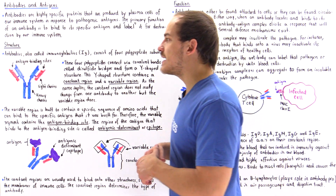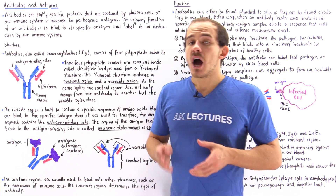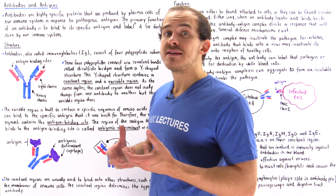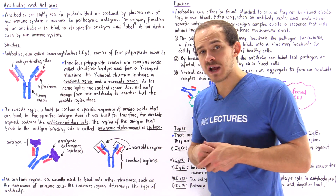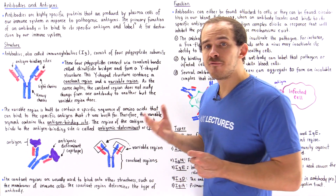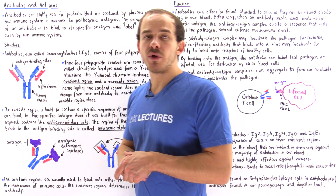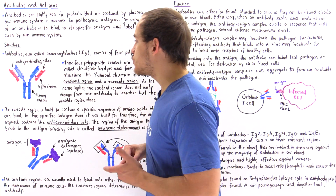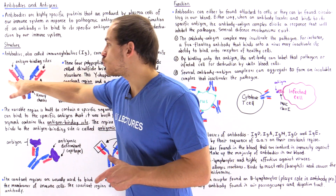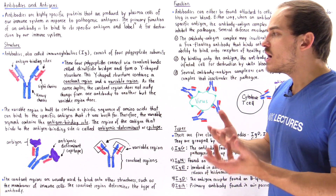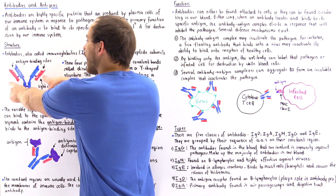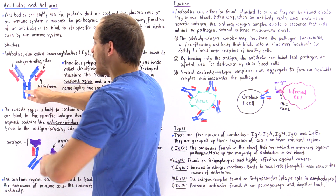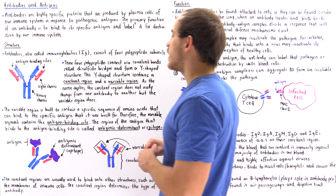What about the structure of these antibodies? Antibodies consist of four polypeptide subunits that bind together via disulfide bridges — covalent bonds between sulfur atoms — and they bind in such a way to form a Y-shaped structure. Two of these polypeptides are heavy chains, which are large polypeptide chains, and the other two chains are the light chains, which are smaller than the heavy chains. The two light chains are bonded via disulfide bridges to the two heavy chains, and the two heavy chains are also bonded to each other by these disulfide bonds.